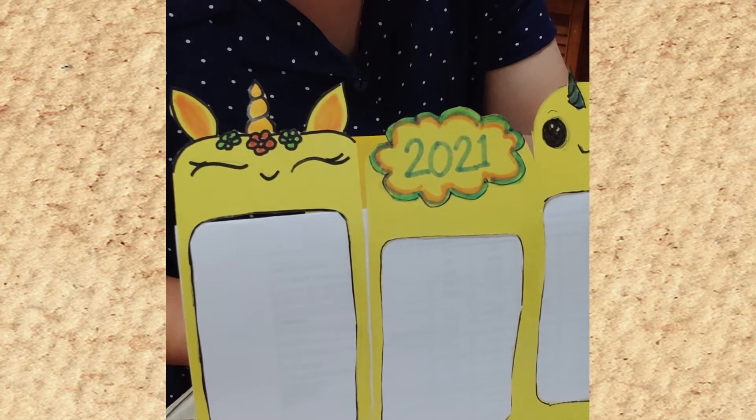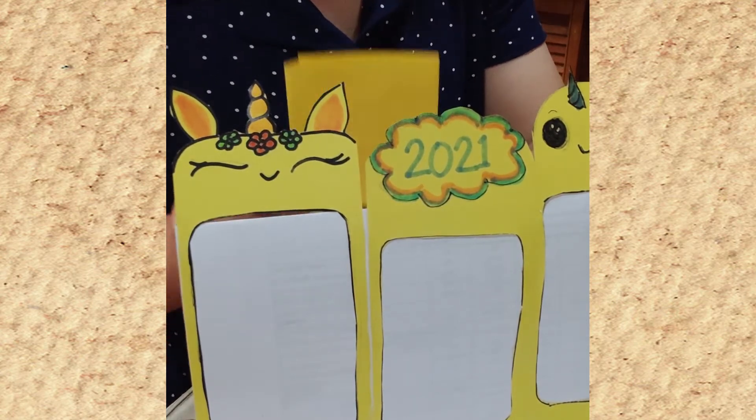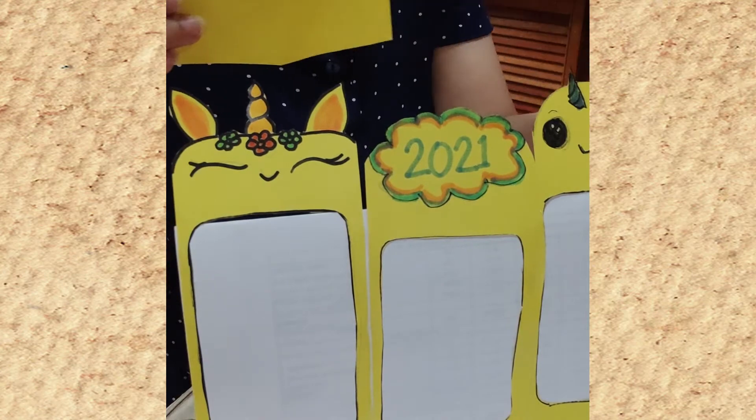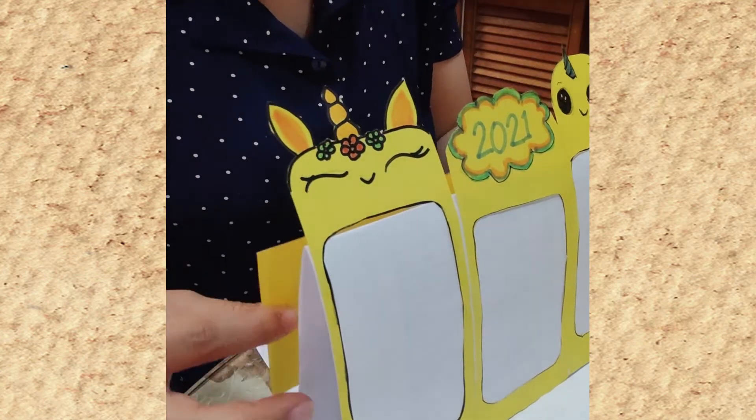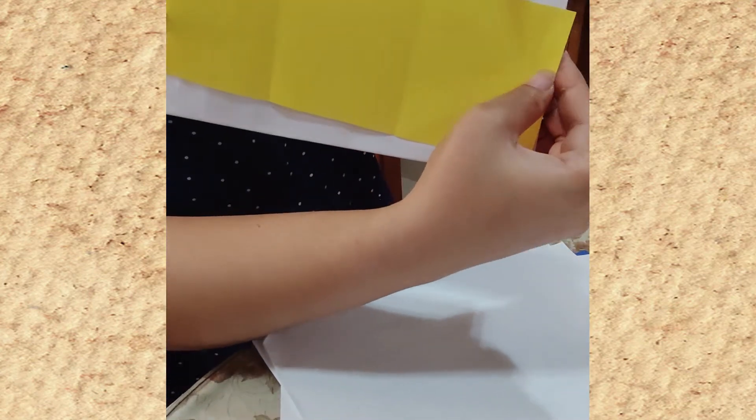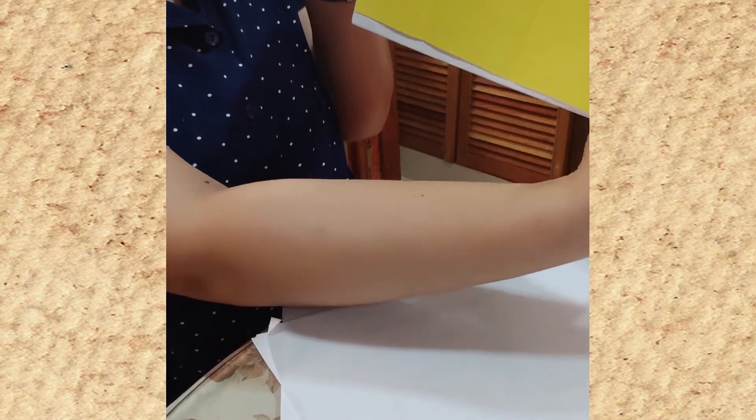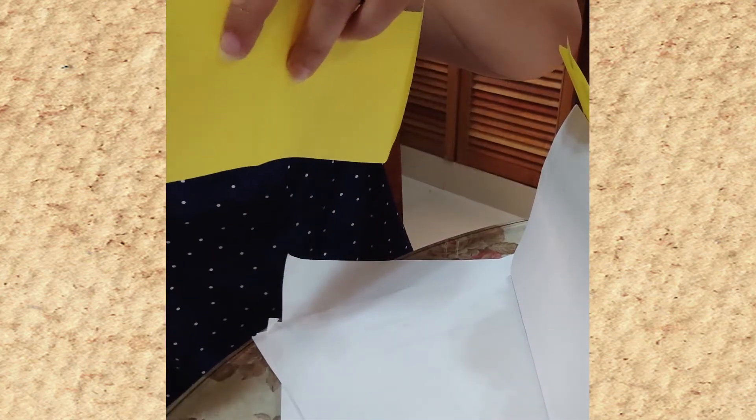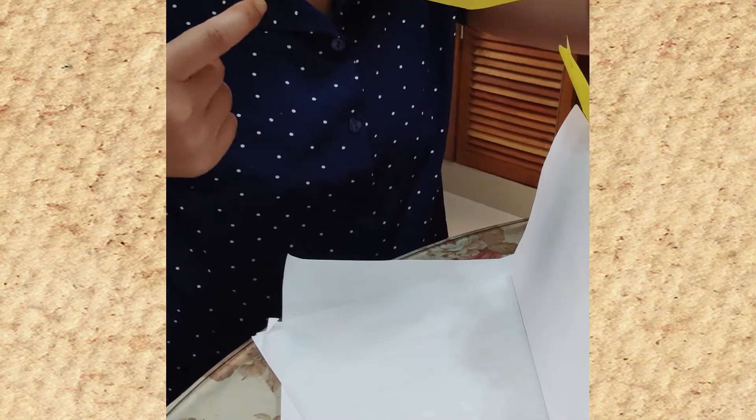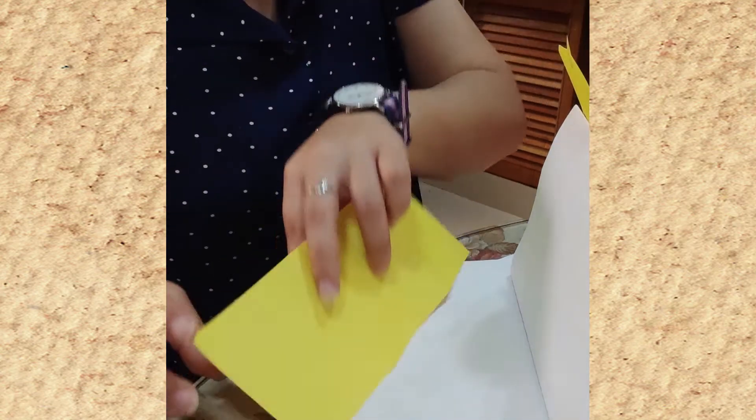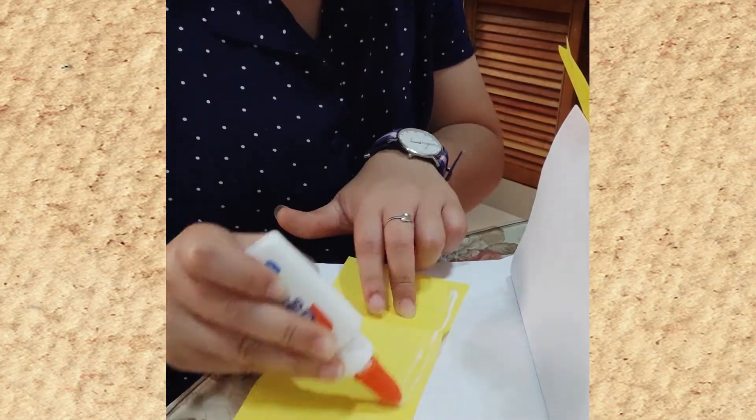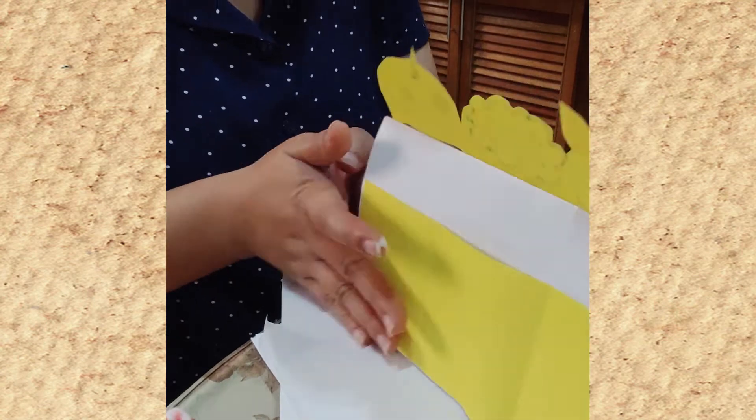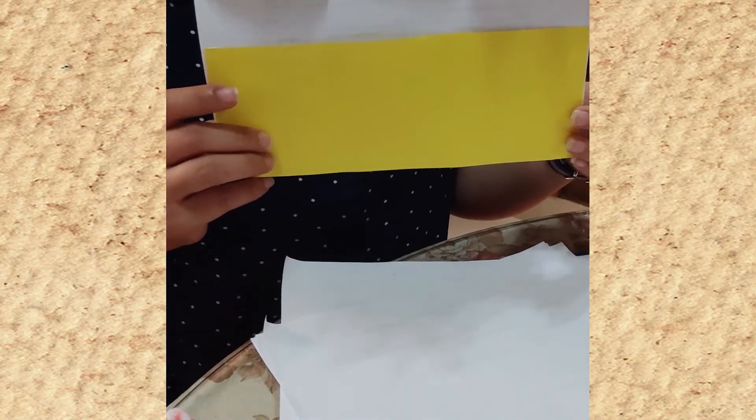The next step is, we will now make the card holder. So, you can get the excess paper that you cut a while ago or you can cut another paper with the same length as your calendar stand. So, this will serve as your card holder. Now, you have to put a glue at the edge again. You will only put here, this part, this part and this one. We are now done with our card holder.